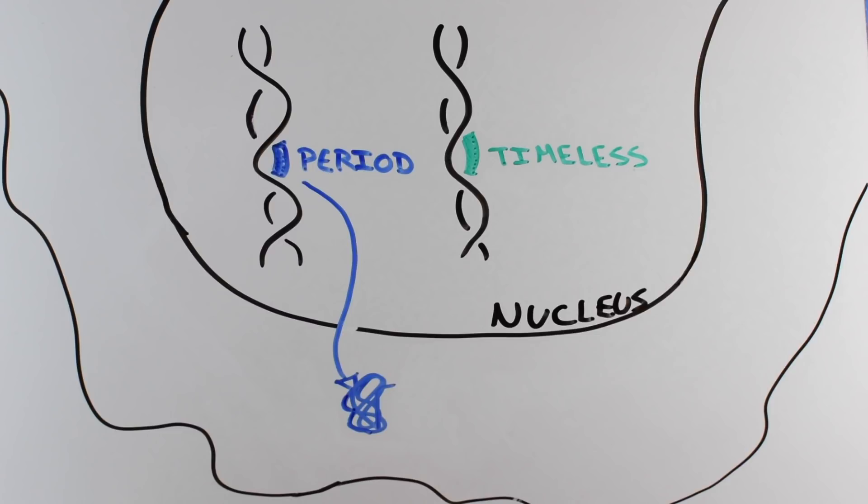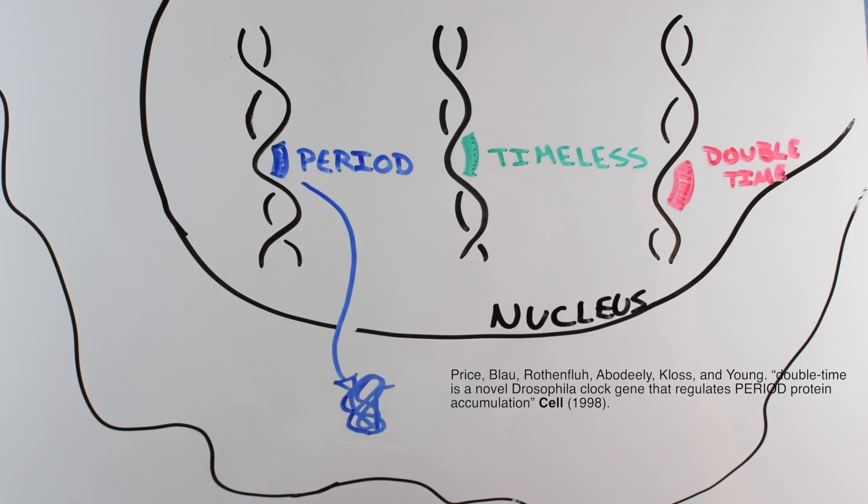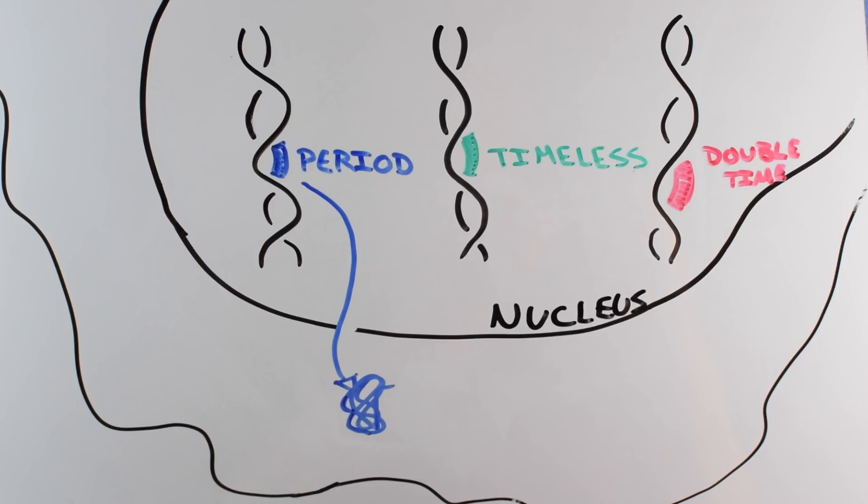But period and timeless aren't enough to explain the whole cycle. The final piece of the puzzle came in 1998 with another gene called double time. The double time protein reduces the stability of period outside of the nucleus, which leads to a delay in the cycling. So the whole setup goes something like this.